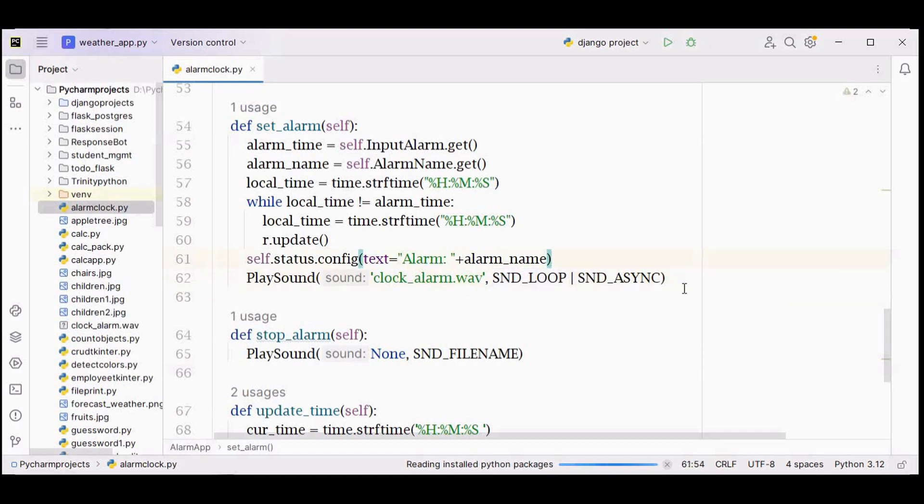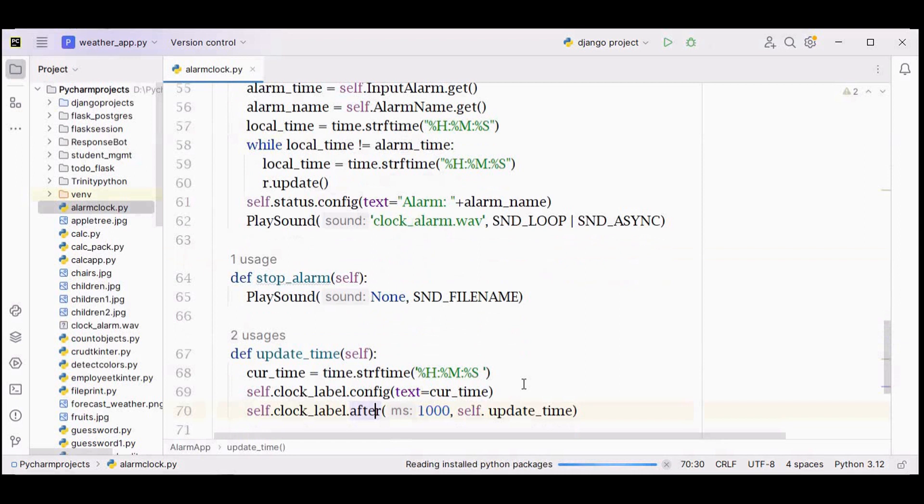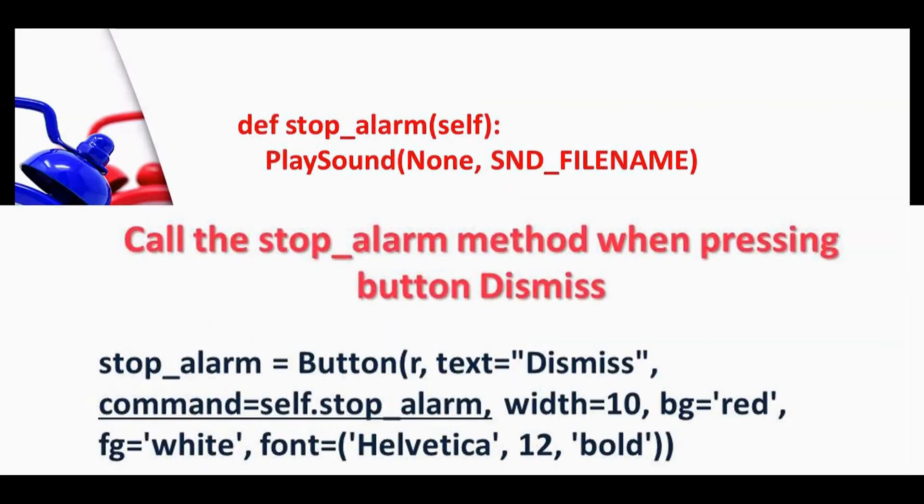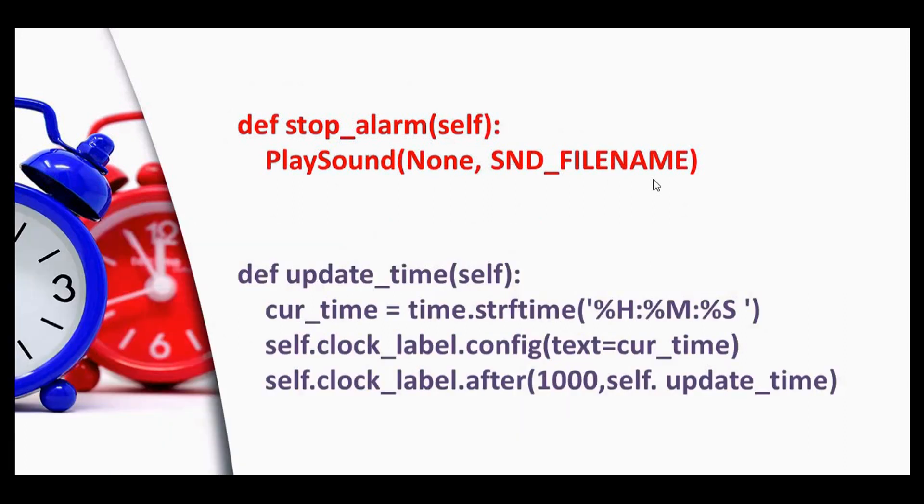We have two more methods called stop function. This is to stop the alarm sound. PlaySound takes two arguments: first argument is None and second argument is sound file name. Finally we have this update time method.